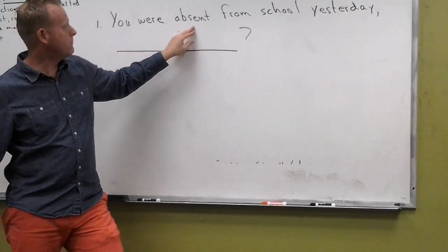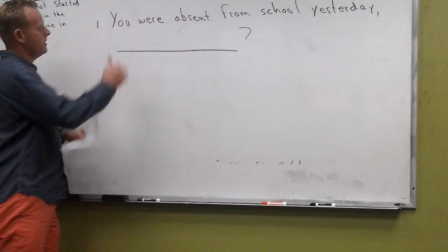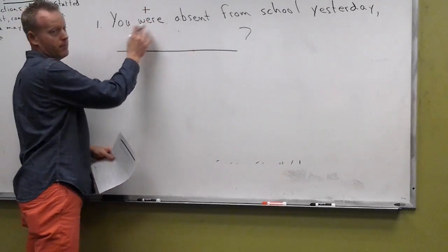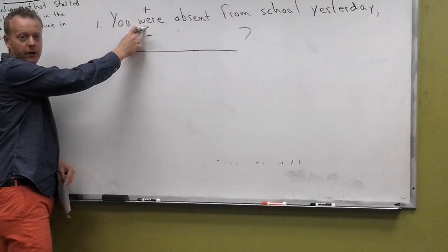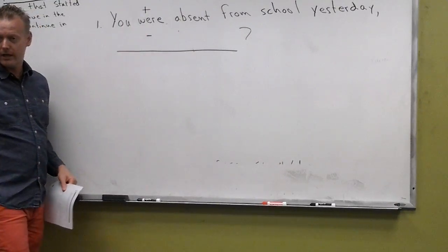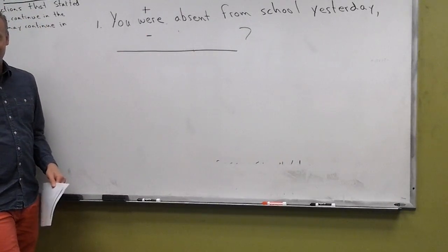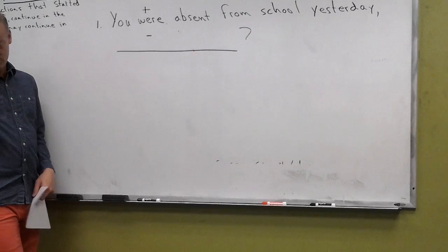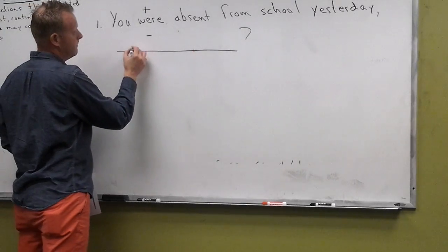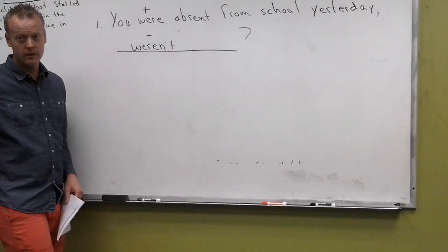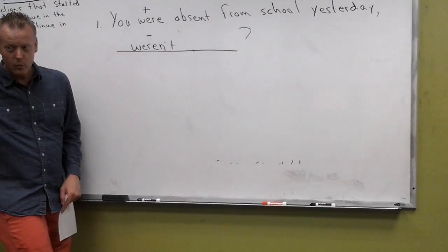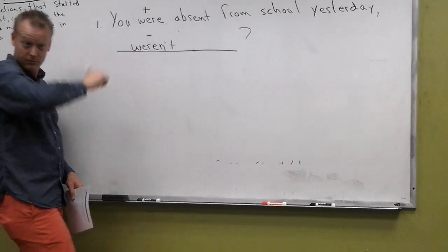You were absent from school yesterday. Now remember, if it's positive up here in the main statement, I've got to make this negative. So use the same verb, make it negative. Who can make it negative? Anybody? Keep the same verb. Weren't. Weren't. You. You. Thank you.